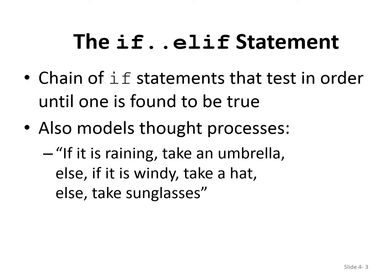A chain of if statements that tests conditions in order until one is found to be true. For example: if it is raining then you take an umbrella, or else if it is windy then you take a hat, or else you take sunglasses. When there are more than two conditions, it's called multi-way selection.